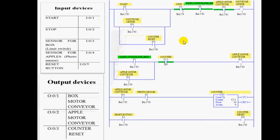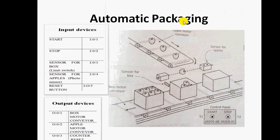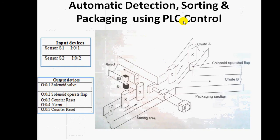If the cyclic process is required again, the reset button is pressed and the process repeats in a cyclic manner. This completes the automatic packaging case study. Now we move on to automatic detection, sorting, and packaging using PLC control.